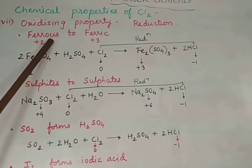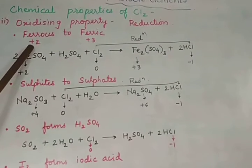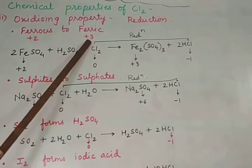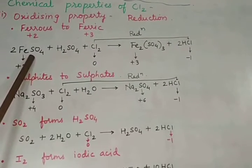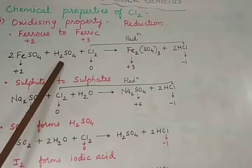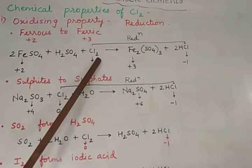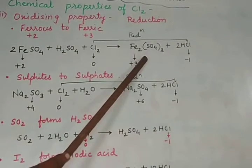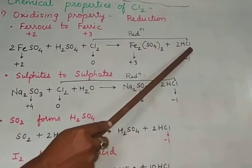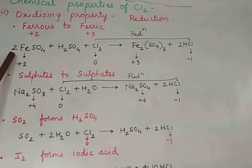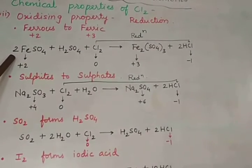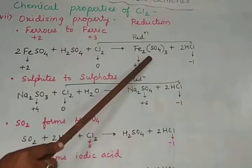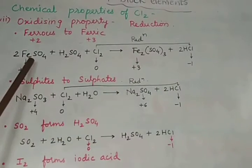Chlorine converts ferrous salts to ferric salts. Ferrous indicates oxidation state plus two and ferric is plus three oxidation state. So ferrous sulfate (FeSO4) in the presence of H2SO4, when treated with chlorine, forms ferric sulfate (Fe2(SO4)3) along with two HCl. The balancing factor is two.